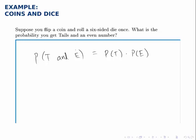So the probability of one and the other is the product of their individual probabilities. The probability of flipping a coin and getting tails is one out of two, and the probability of getting an even number is three out of six.